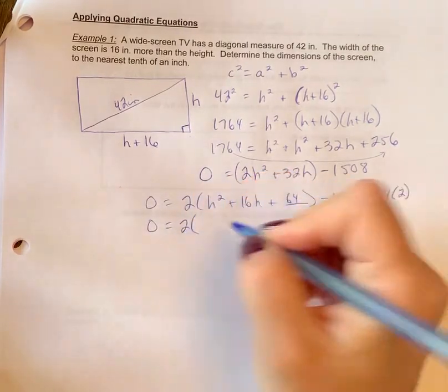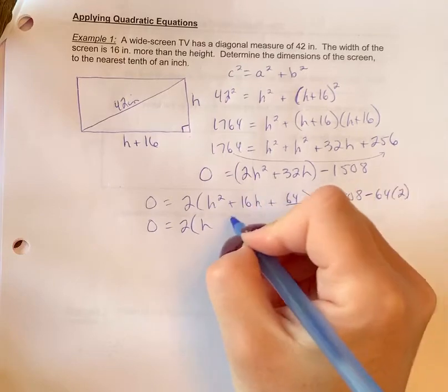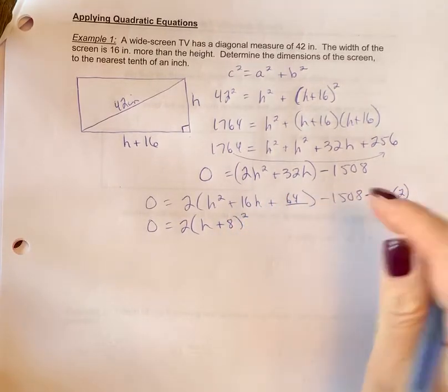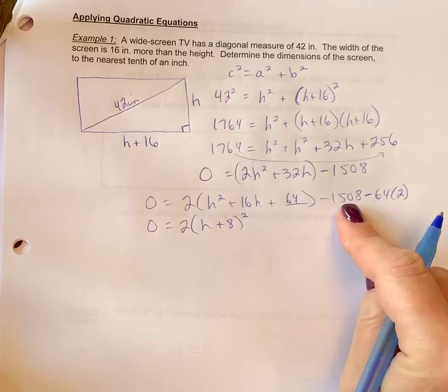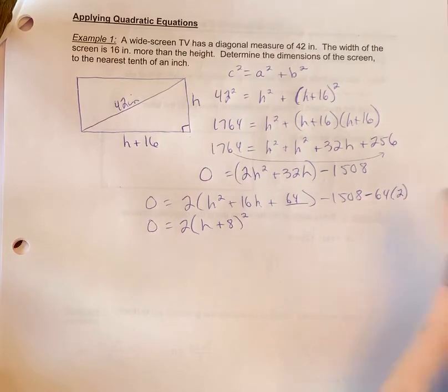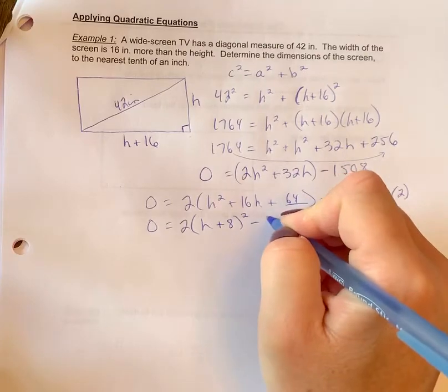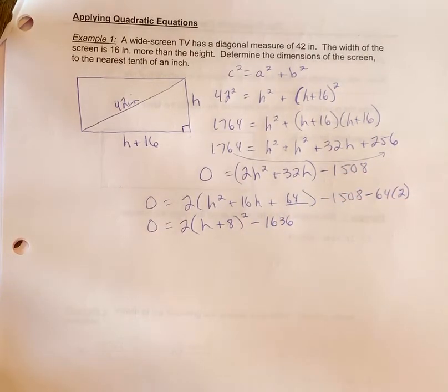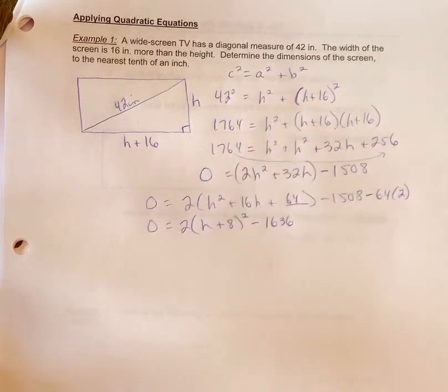Zero equals 2h. Both signs are positive, so plus square root 64 is 8 squared. So again, you have your calculator for this, but you're going to go negative 1508 minus the 64 times 2, and you're going to get minus 1636. Okay, all of that was just completing the square, and coming up with our equation, of course.